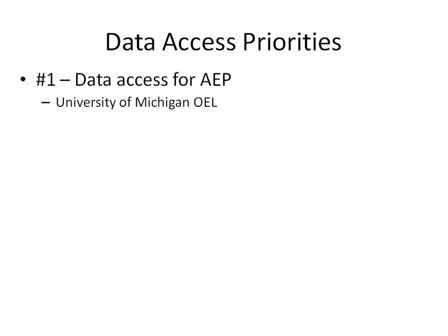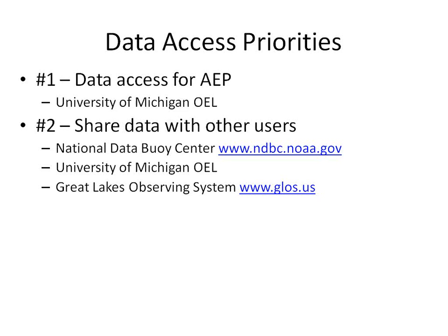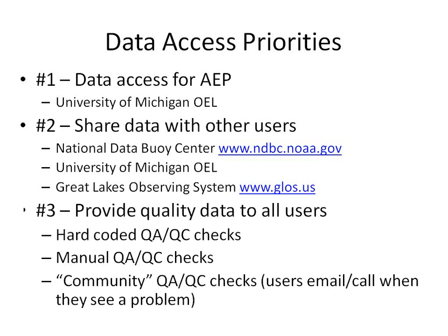Here are some pictures of our deployment. We used our boat to deploy the buoy, used the jacket barge to help deploy our mooring, and the buoy was transported very easily on the trailer. The primary data access priorities: our number-one goal was to have data available for AEP and the offshore and on-site work — we utilized Guy's website for that. Our second priority was sharing data with other users, so we were sending data to the National Data Buoy Center, accessed by the National Weather Service, Coast Guard, sheriff, and fishermen, and also sharing with the Great Lakes Observing System.